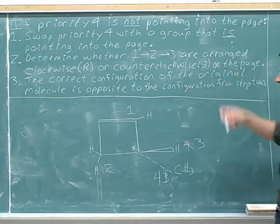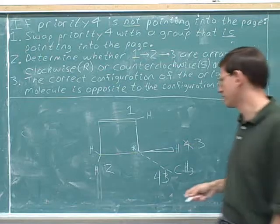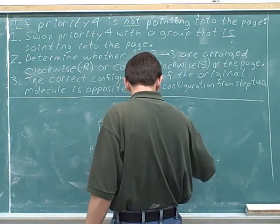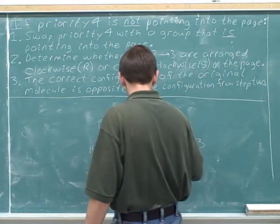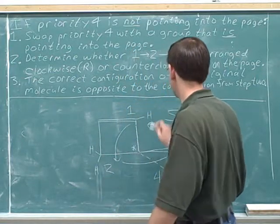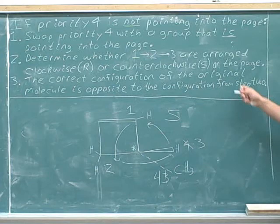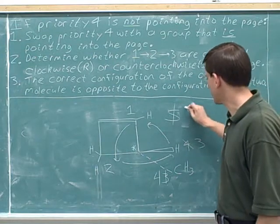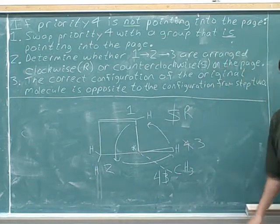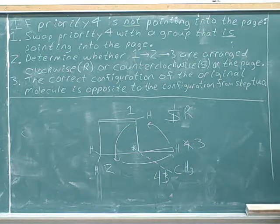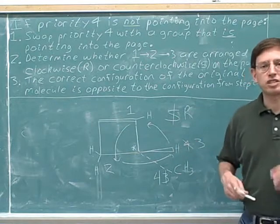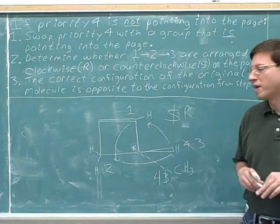Step two: what's the configuration of one to two to three on the page? Counterclockwise, which is S. So step three, before the swap, the correct configuration must have been R. The answer is R — the stereocenter is an R stereocenter. Once again, we see how flexible our method is. It works for both straight chain and cyclic molecules.